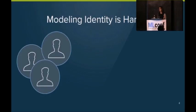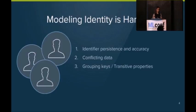So doing this actually is quite hard because modeling identity is hard. Dealing with all of these different identifiers and putting them together and munging them presents a myriad of problems. And they range from dealing with identifier persistence. Are people clearing their cookies all the time? How accurate are these identifiers? Conflicting data. If we sync with multiple partners and they both tell us that this idea is the same, how much do we trust that? Grouping keys and transitive properties. So what I mean by that is, if A is connected to B and B is connected to C, should we infer, therefore, that C is also connected to A?